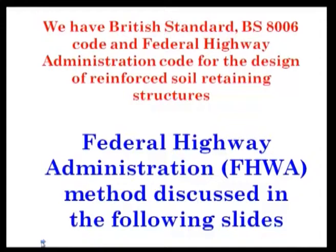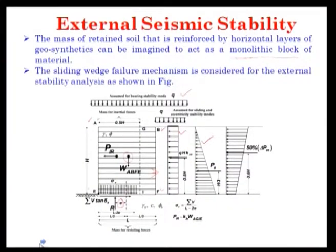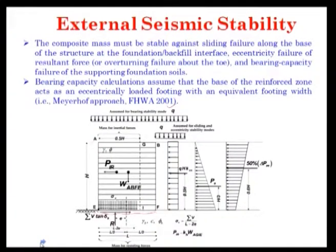Earlier we discussed this design of the Federal Highway Administration (FHWA) reinforced earth wall. We reviewed external seismic stability, which has been considered by treating the structure as a monolithic block of material. The bearing capacity calculation assumes that the base of the reinforced zone acts as an eccentrically loaded footing with an equivalent footing width using the Meyerhof approach.